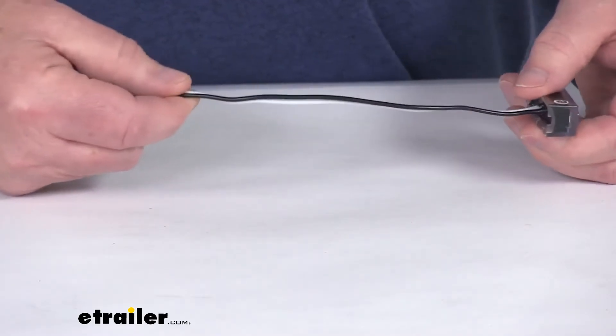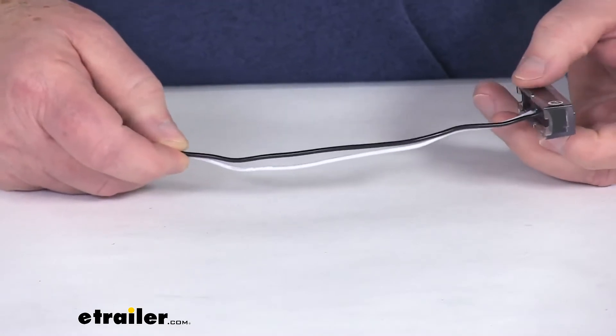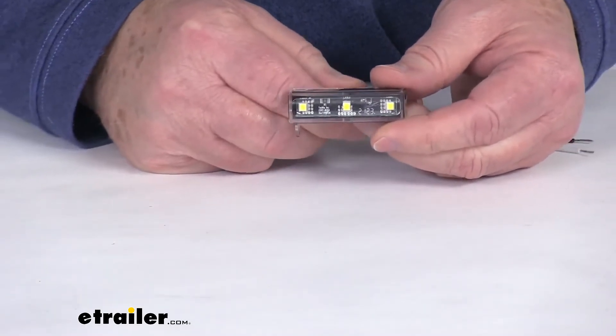Now this will hard wire to your application, the wire length on this is 7 inches. They give you both a power and a ground wire. This is compatible with 12 volt DC systems.